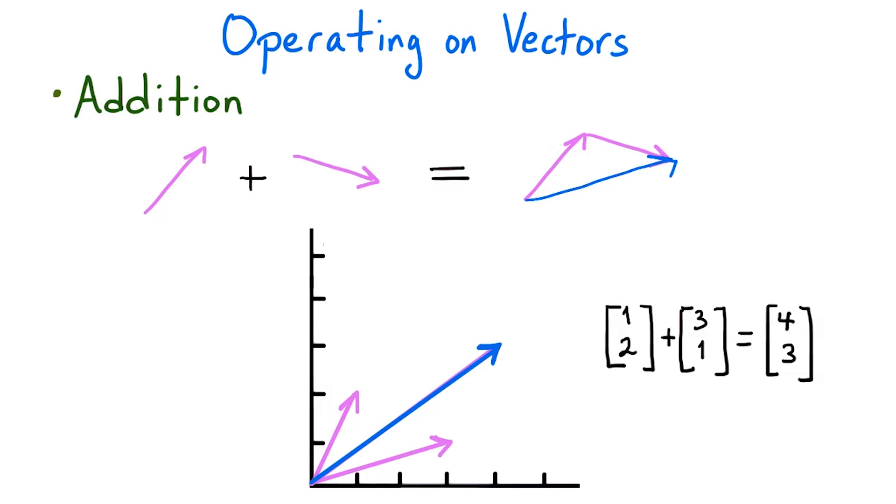In addition to this geometric interpretation of vector addition, we have a numeric interpretation. Given the first two vectors as a list of coordinates, we can add the two vectors by adding the corresponding coordinates of each vector.